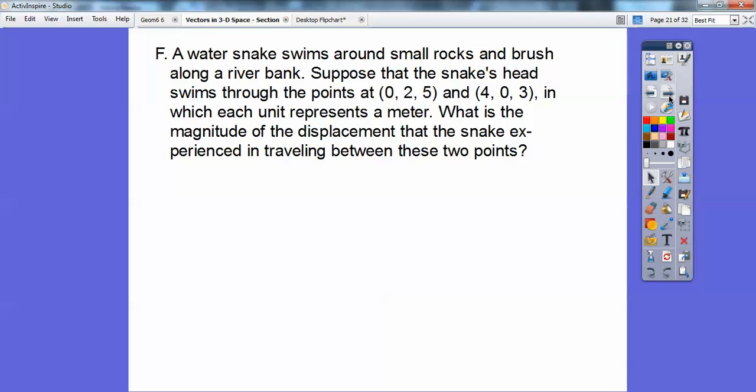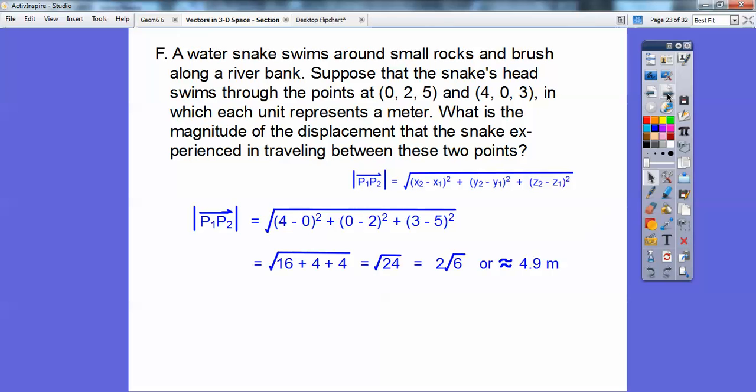Okay, so here, let's try an application problem. A water snake swims around small rocks and brush along a river bank. Suppose that the snake's head swims through the points (0, 2, 5) and (4, 0, 3), in which each unit represents a meter. So what is the magnitude of the displacement of the snake's experience in traveling between these two points? So here's my magnitude formula. So it's just like the Pythagorean theorem. I'm going to subtract the x's, the y's, the z's, square them, add them together. So there you go, and I get about 4.9 meters at the very end right there. Easy enough, isn't it?